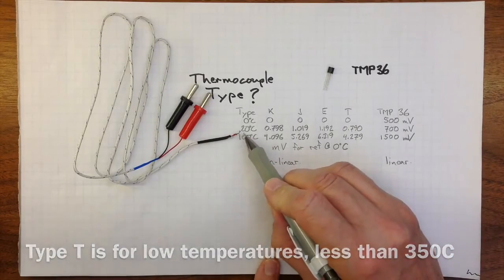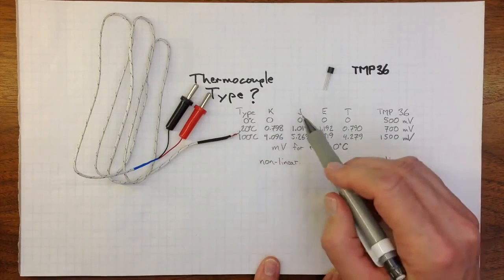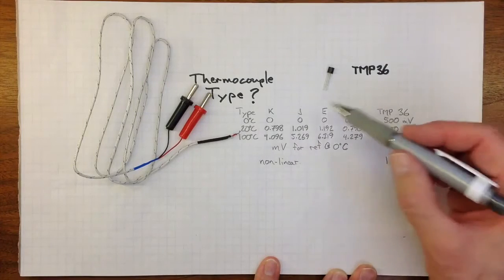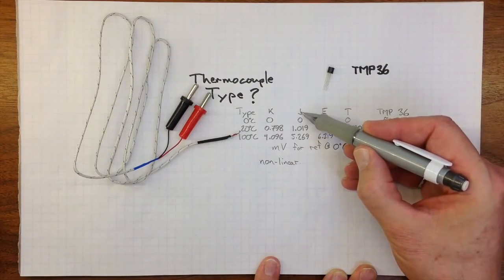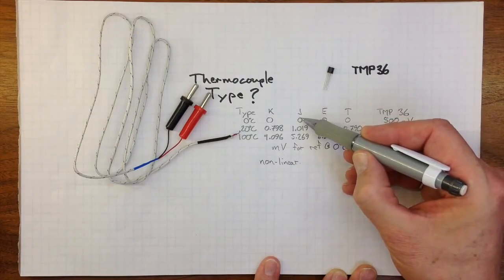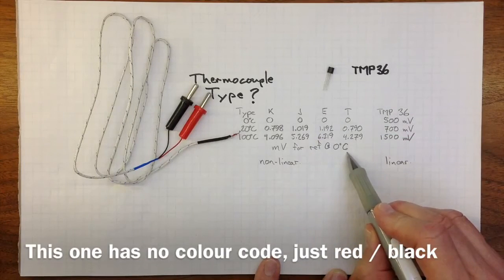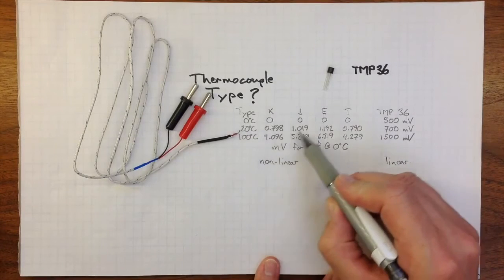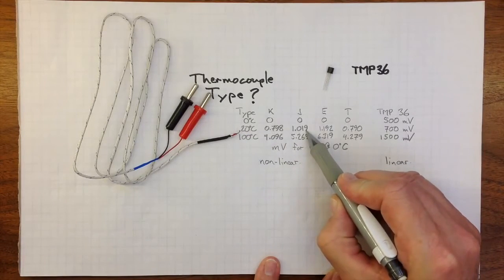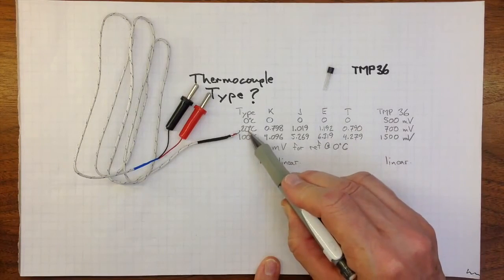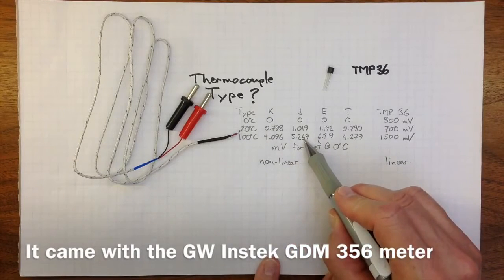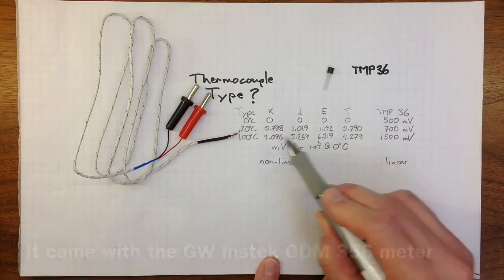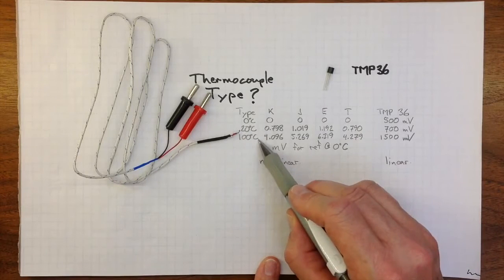Different metals give different potentials from the thermocouple. For example, if this was a type J thermocouple, we'd expect to see with the reference junction at zero degrees Celsius, no voltage if the bead was at zero degrees Celsius, or about a millivolt if the bead was at 20 degrees Celsius, or a little over five millivolts if the bead was at 100 degrees Celsius.